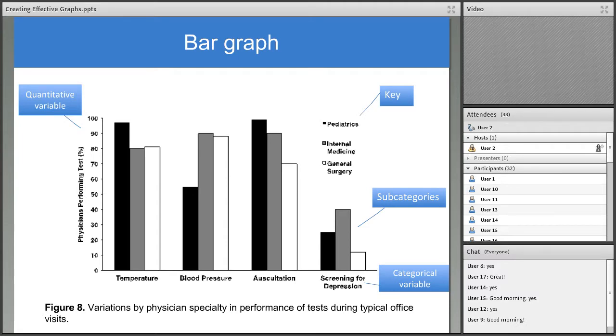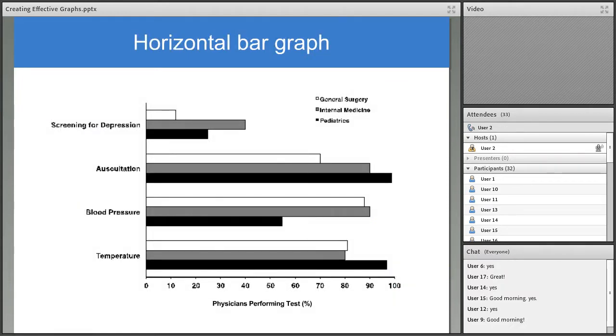If your categories have long titles, or there are a lot of categories, you might want to use a horizontal bar graph. These are the same data that we just saw, but now the categories are on the y-axis, and the measured variable is on the x-axis. This format is less common than a vertical bar graph. Note that, whether arranged vertically or horizontally, the bars should all be the same width.